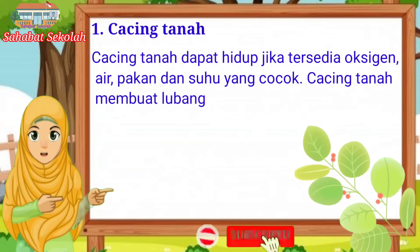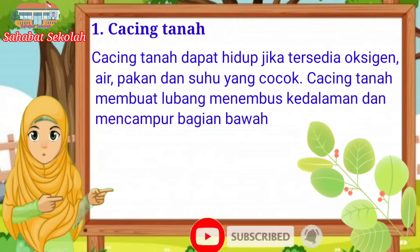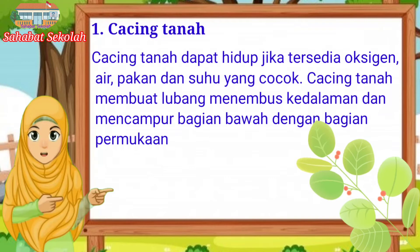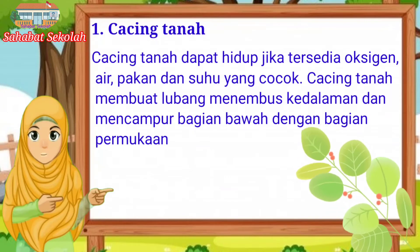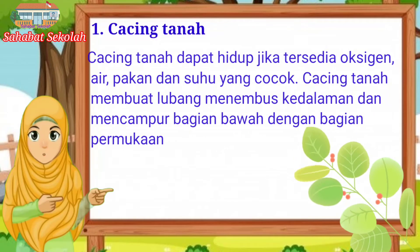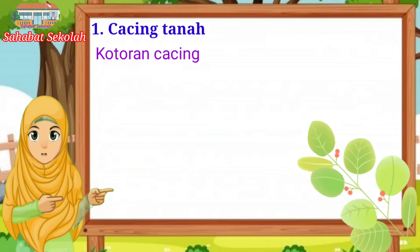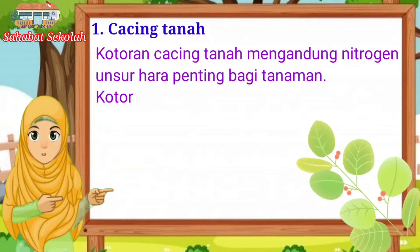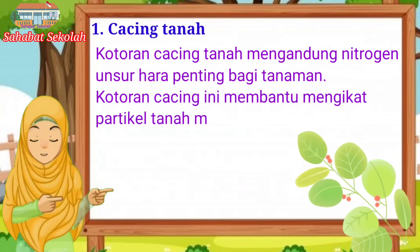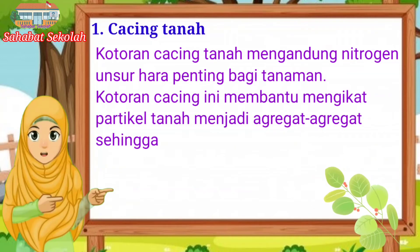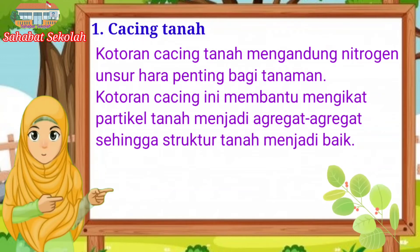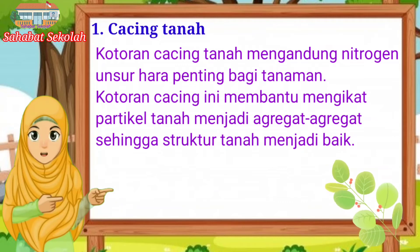Cacing tanah dapat hidup jika tersedia oksigen, air, dan pakan yang cocok. Cacing tanah membuat lubang hingga kedalaman tertentu dan mencampur bagian bawah tanah. Kotoran cacing tanah mengandung nitrogen, unsur hara penting bagi tanaman. Kotoran cacing ini membantu mengikat partikel tanah menjadi agregat-agregat sehingga struktur tanah menjadi baik.